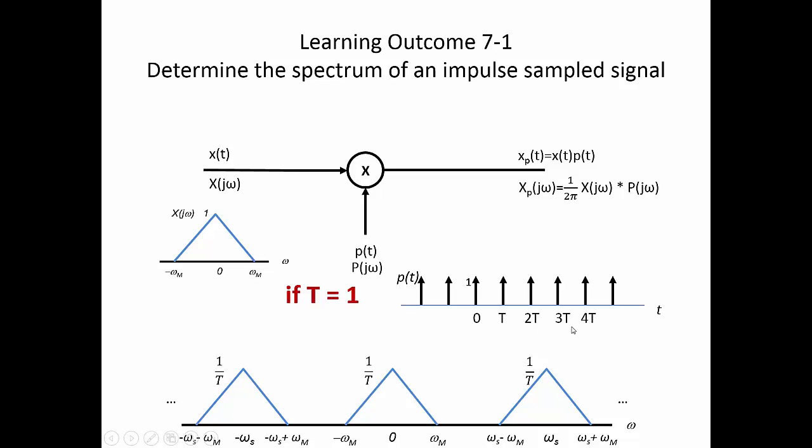Therefore t is 1. If t is 1, what's omega s? Omega s will be 2 pi over t, which will just be 2 pi if t is 1. Therefore omega s is 2 pi.